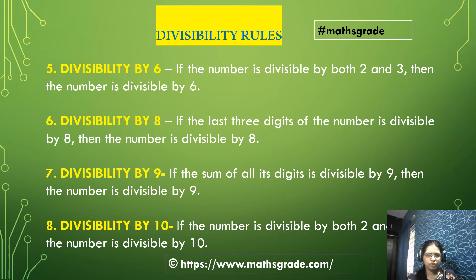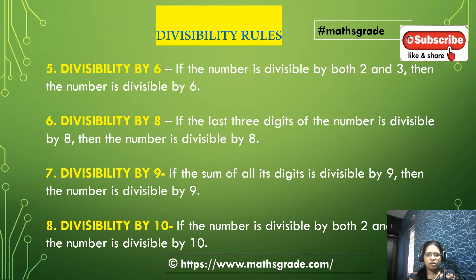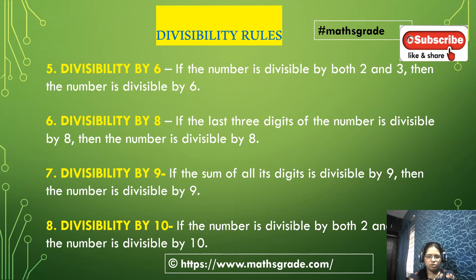Now we will discuss the Divisibility Rules. Divisibility by 6: if the number is divisible by both 2 and 3, then the number is divisible by 6. Divisibility by 8: if the last 3 digits of the number are divisible by 8, then the number is divisible by 8. Divisibility by 9: if the sum of all its digits is divisible by 9, then the number is divisible by 9. Divisibility by 10: if the number is divisible by both 2 and 5, then the number is divisible by 10. These are the divisibility rules of the numbers 2, 3, 4, 5, 6, 8, 9, and 10.